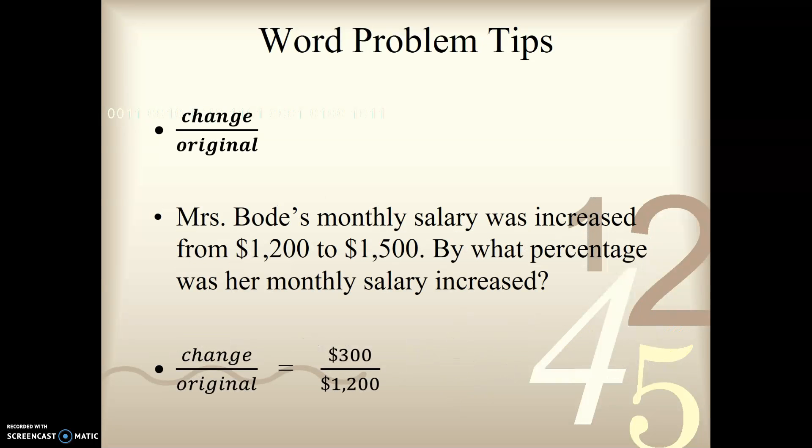Let's look at our third type of problem here. It's change over original. Our example problem says Mrs. Bodie's monthly salary was increased from $1,200 to $1,500. By what percentage was her monthly salary increased? So when we're looking at this, we're looking at the change, the increase in monthly salary. So since it was increased from $1,200 to $1,500, the change is $300. So that's going to go on top. The original was $1,200.